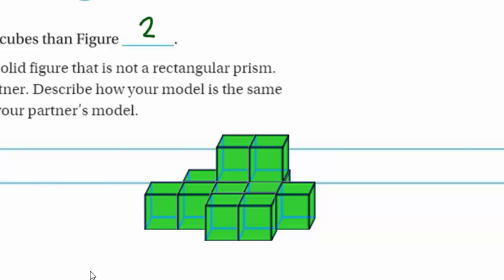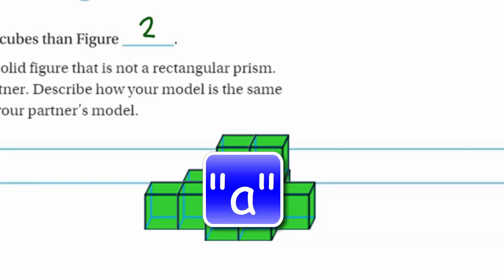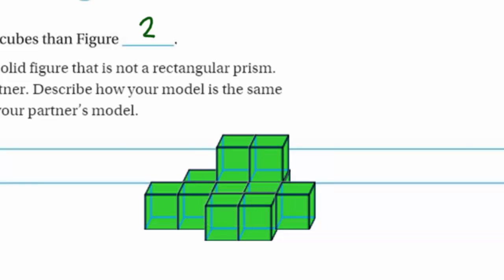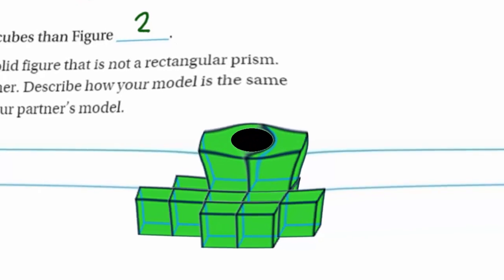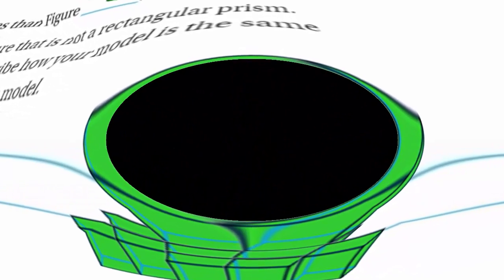This is what my solid figure looks like. It's not a rectangular prism, so you can compare your own with this one unless you've done this in class with your partner, comparing the dimensions of your solid figures and describing how your models are the same and different. Any answer would suffice. Thank you so much for joining me today.